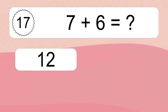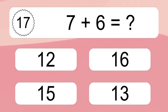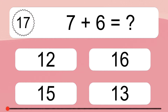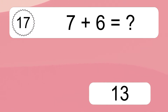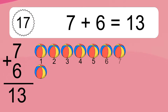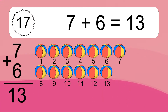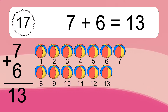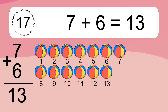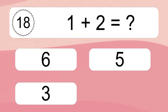7 plus 6 equals what? 7 plus 6 equals 13. Let's count it. 1, 2, 3, 4, 5, 6, 7, 8, 9, 10, 11, 12, 13.